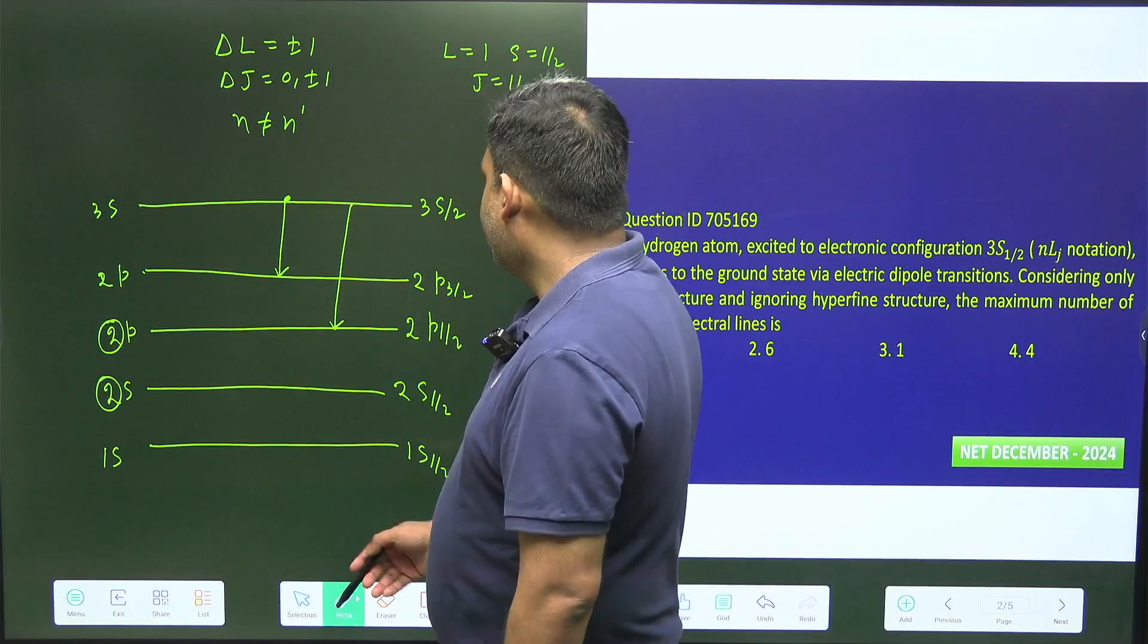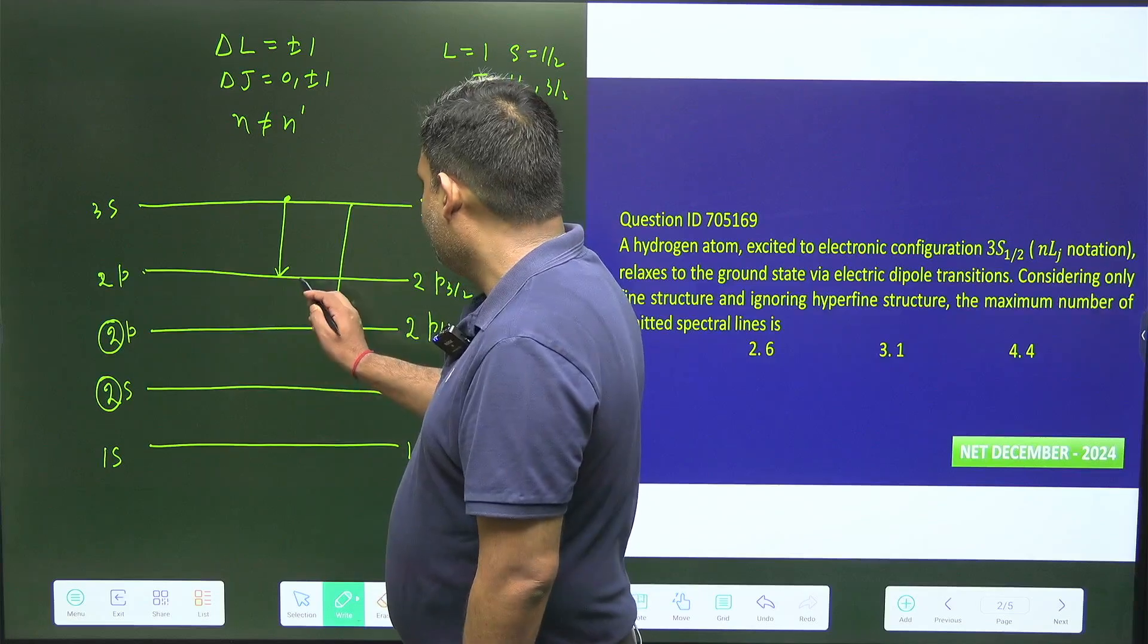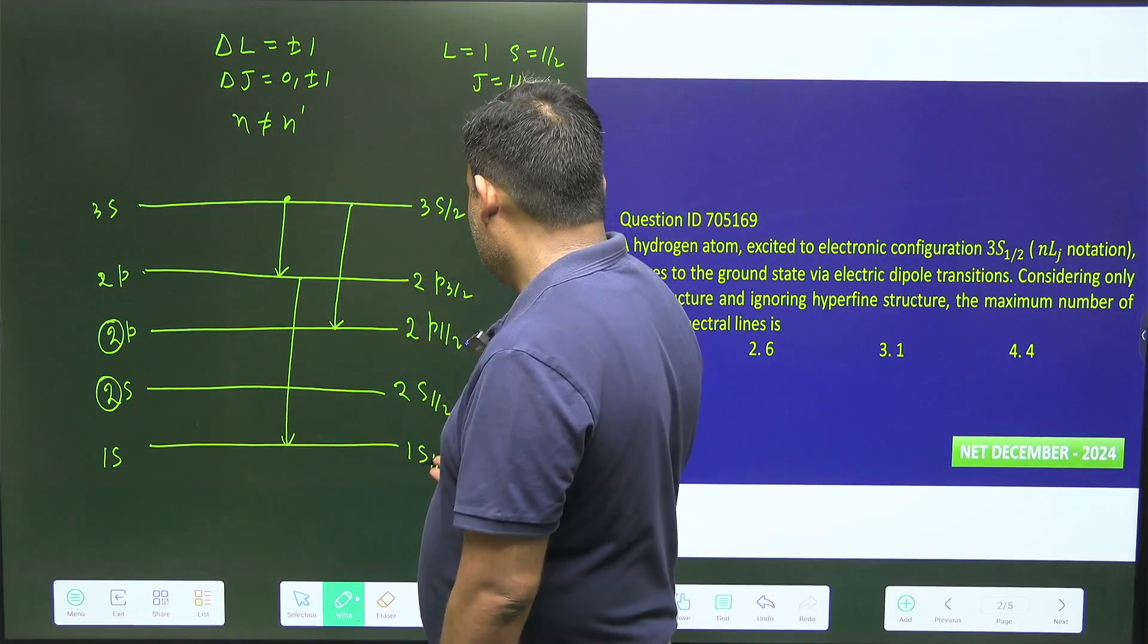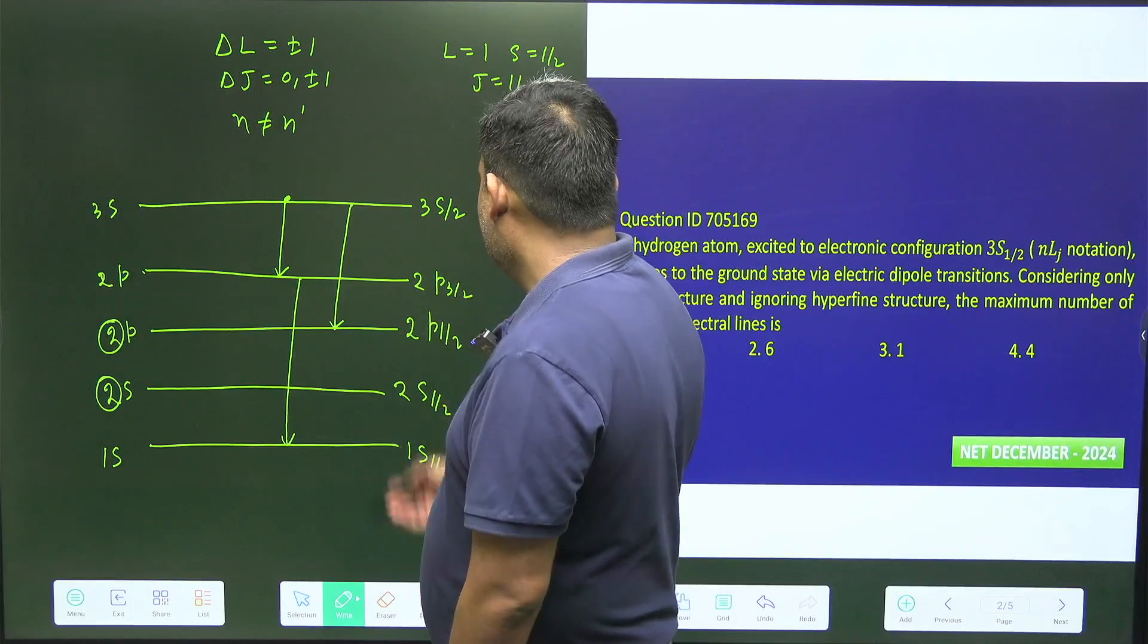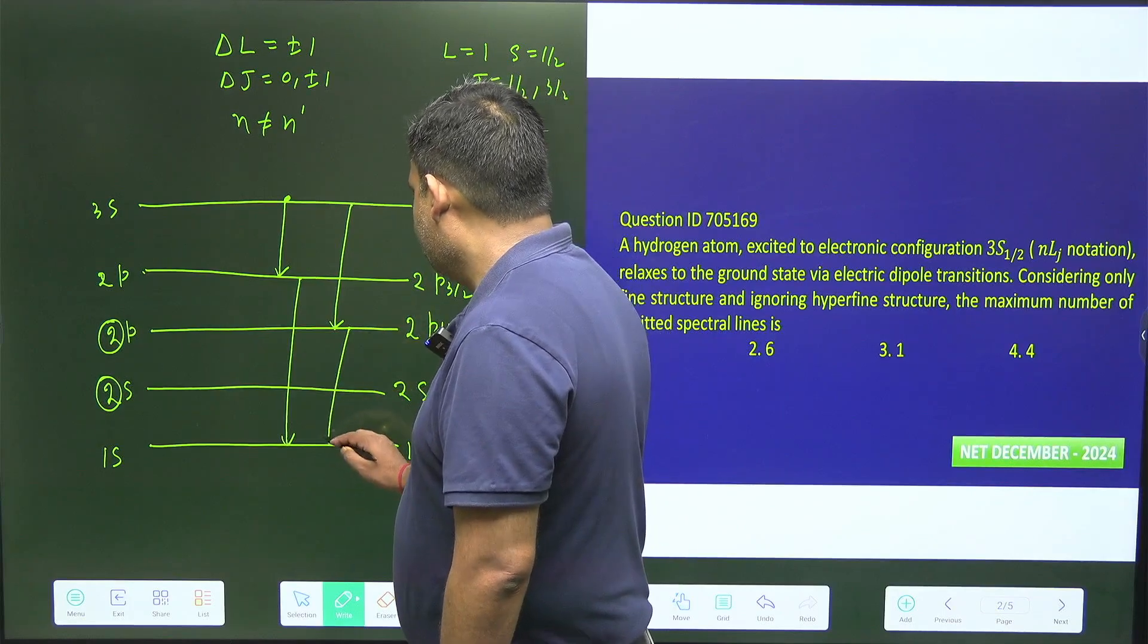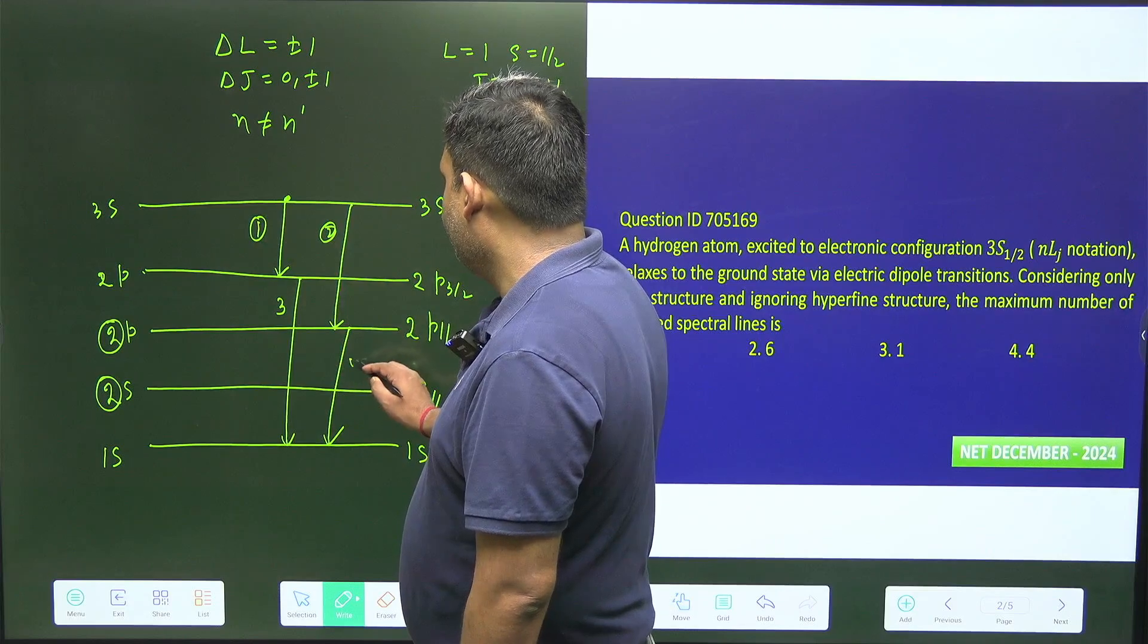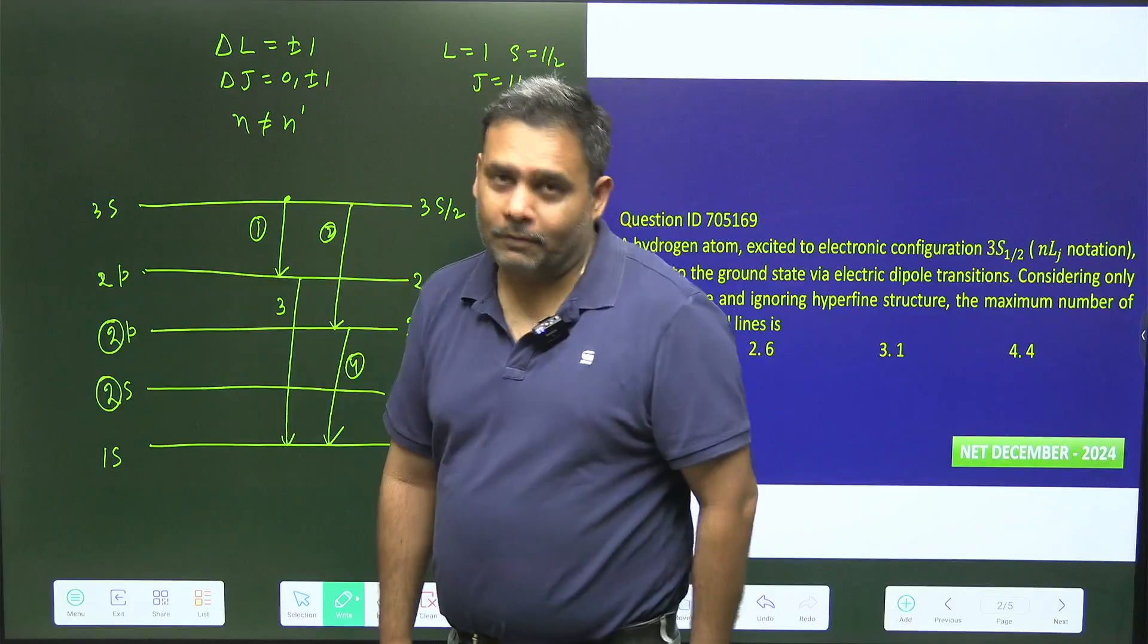Then what is going to happen? Obviously another transition is taking place from here to ground state. There is n equals 3 by 2 to 1 by half: delta j equals minus 1 is possible. And here you can go for another transition. So these four transitions—this is transition number one, two, three, and four. So there are four lines will be emitted in this particular transition.